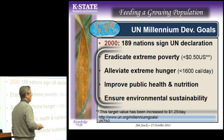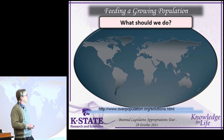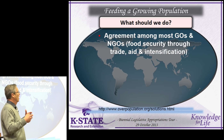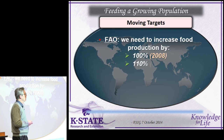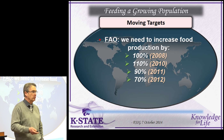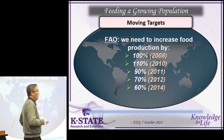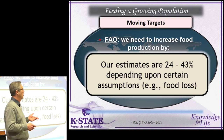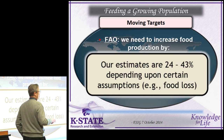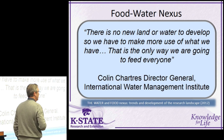So what do we do? FAO says we need to increase food production — in 2008 they said 100%, in 2010 they said 110%, in 2011 it was 90%, in 2012 it was 70%, and in 2014 they said 60%. We don't really know how much more food we need. Our own calculations suggest the estimates are really 24% to 43%. But even 24% is a huge number, and it takes about eight years to develop a new wheat variety. There's no new land or water to develop — we have to make more use of what we have.